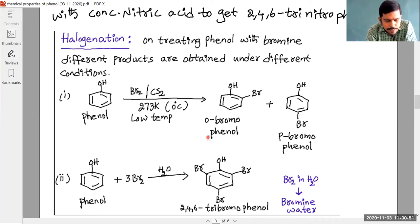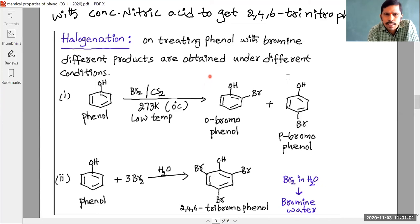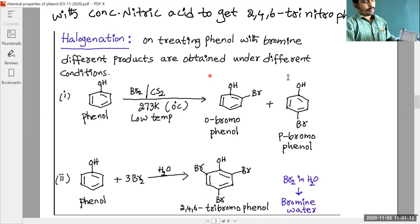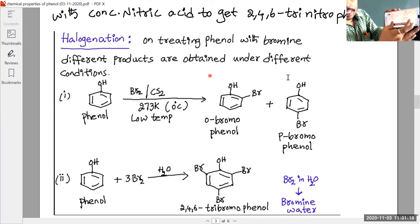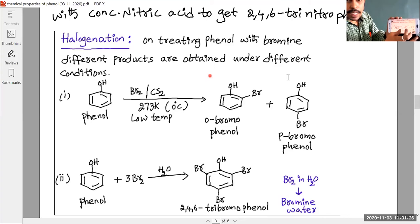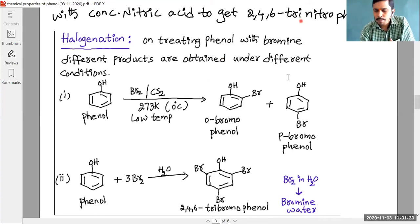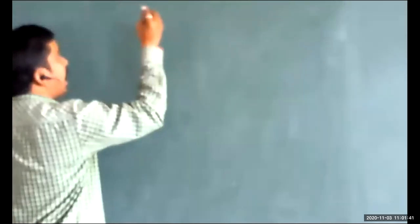A student named Pavan Kumar asked for the explanation again on the board. The teacher comes to the board to explain. Reaction with halogens is called halogenation. Two types of reactions are observed: in the presence of non-polar solvent, and in the presence of polar solvent.